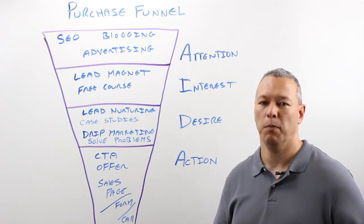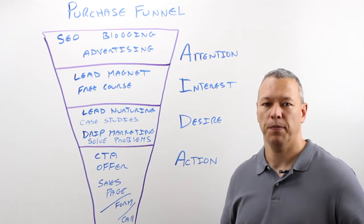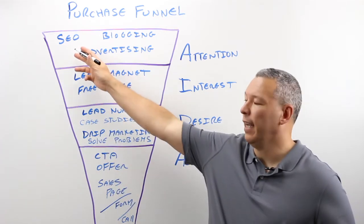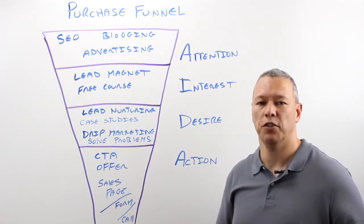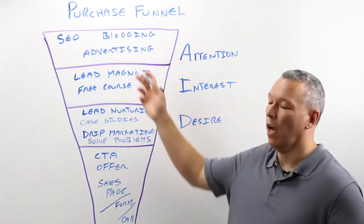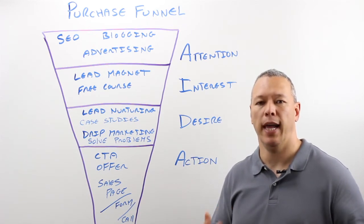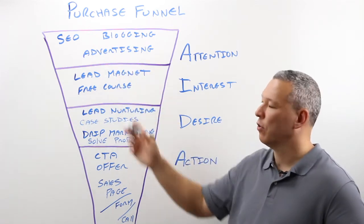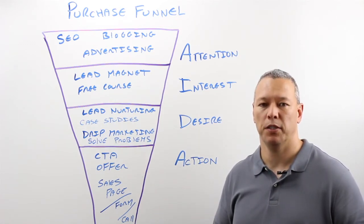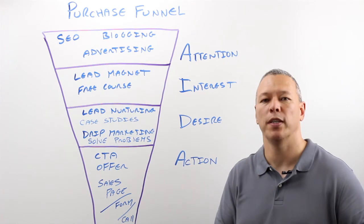So how does that translate to online marketing? When it comes to attention, the first thing you want to do is catch their attention. When it comes to online marketing, you have SEO — optimizing your pages so they get found in the search engines when people search for something you sell or offer — blogging, creating blog content around questions and search queries people normally ask around your product, and also paid advertising where you go out and find those people and bring them back to your website.